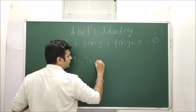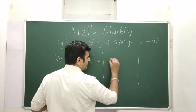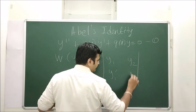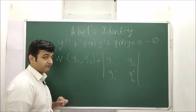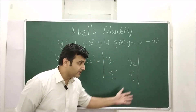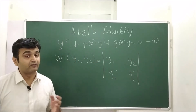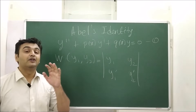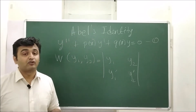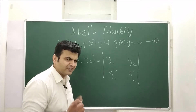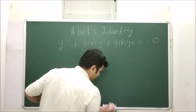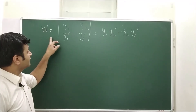The Wronskian is nothing but the determinant where the first row is y1, y2 and the second row is y1 prime, y2 prime — the first derivatives. So if you know two solutions, you can easily compute the Wronskian using this determinant. But the question is: if you don't know y1 and y2, can you still find the Wronskian? The answer is somewhat yes.